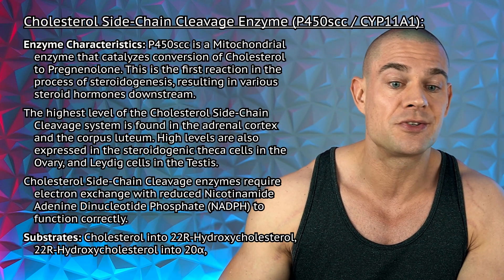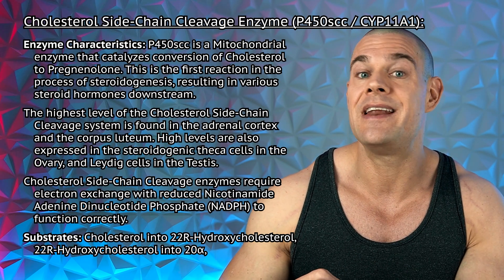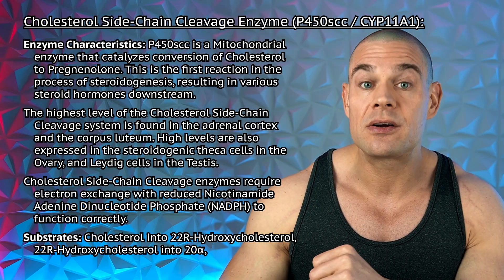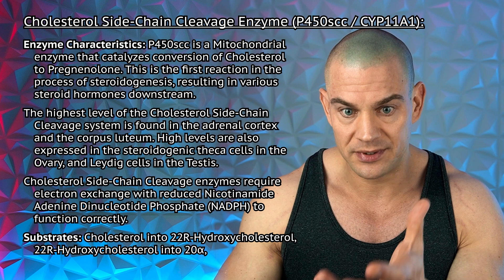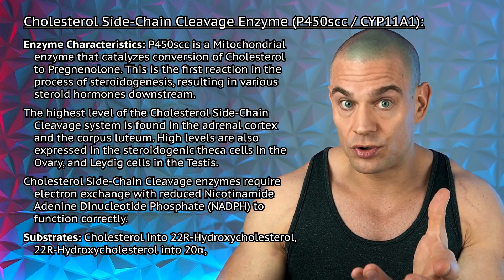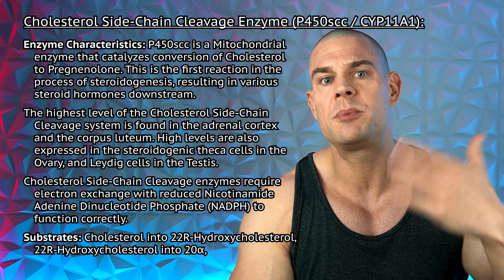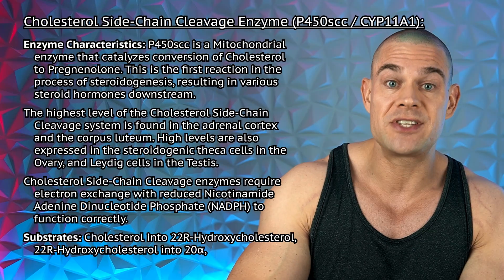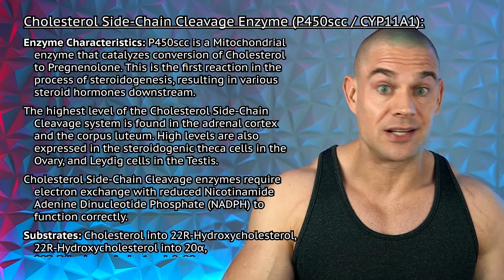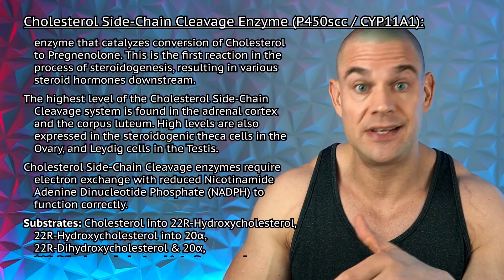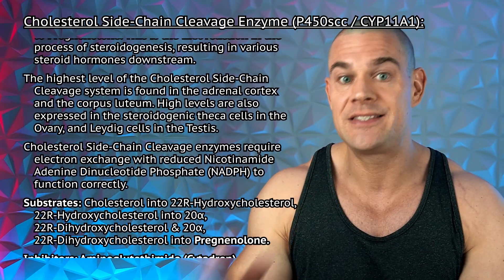Moving over to cholesterol sidechain cleaving enzyme, also known as P450SCC or CYP11A1. This is a mitochondrial enzyme that catalyzes the conversion of cholesterol into pregnenolone. This is the first reaction needed for normal steroidogenesis. The highest level of the cholesterol sidechain cleavage enzyme system is found in the adrenal cortex and the corpus luteum, and it's also highly expressed in the ovaries and the testes.